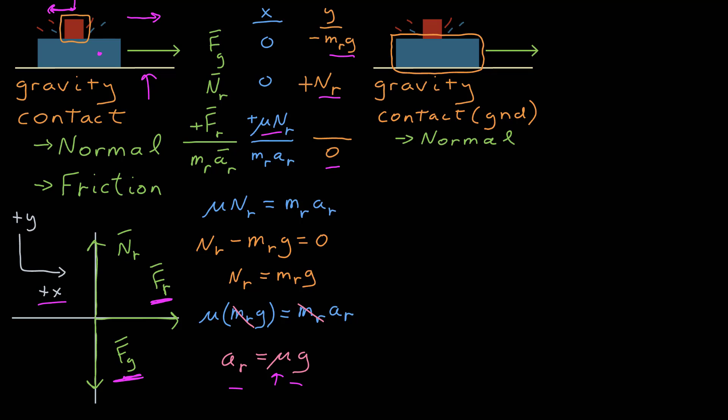But I know that contact is frictionless, so it only has a component normal or perpendicular to the surface. There's also the contact force of red on blue, and that force has a normal component and a frictional component.